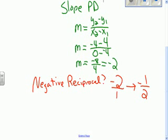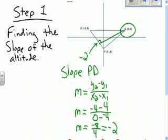Is that right? No. That can't be right, because if this is negative, the negative reciprocal is positive half. Now that's right. So the slope of the altitude from point Q down to side PD is 1 half.